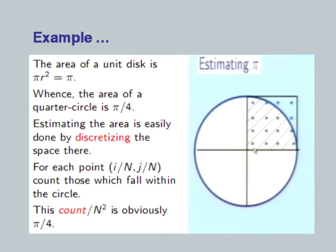With a very large number of points, the total points represent the area of the square, while the count of points inside the circle represents the area of the quarter circle. Each point is 1/n apart, so the x coordinate of point i is i/n and y coordinate of point j is j/n. I need to count points which fall within the circle. For every point I examine whether it is inside or outside the circle.